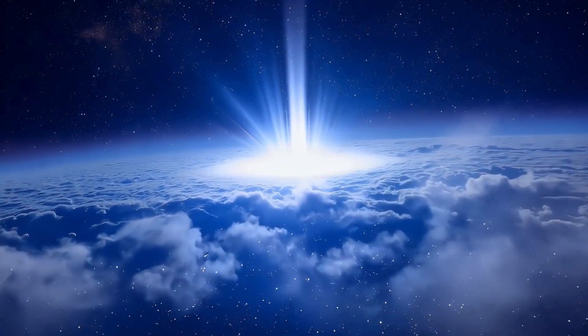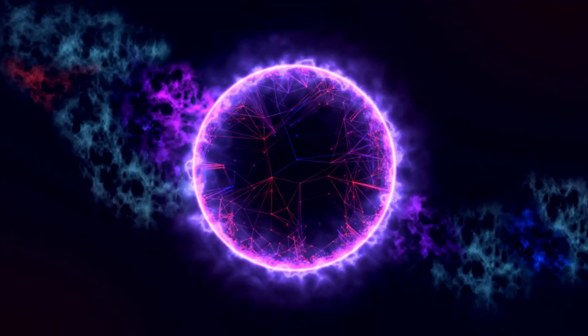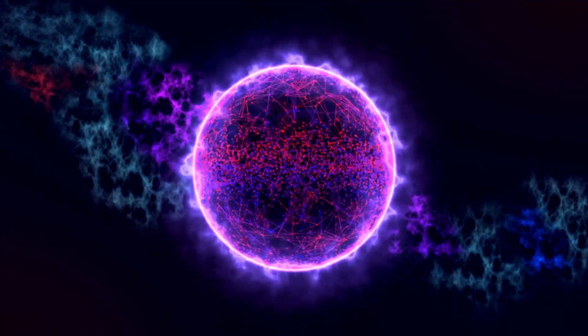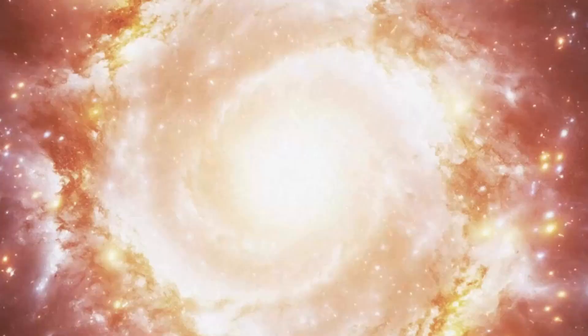These stars are incredibly common in the Milky Way, but their faint glow makes them hard to detect. M-type stars have temperatures around 3,000 Kelvin, which is relatively cool compared to other stars.